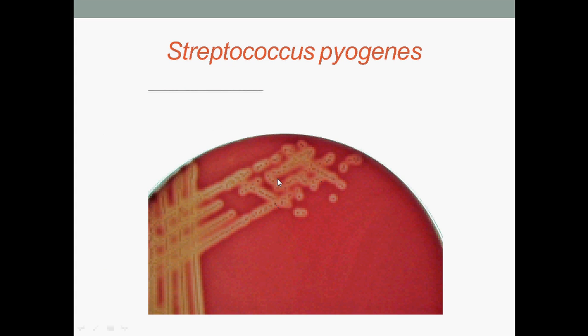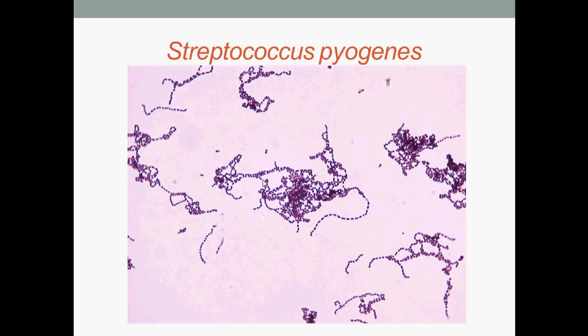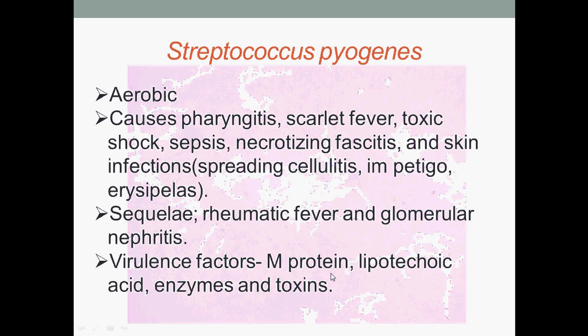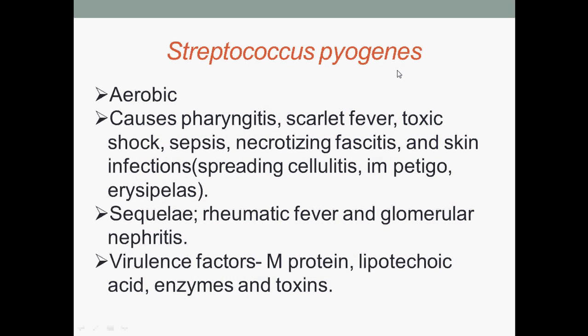Here we have Streptococcus pyogenes colonies on blood agar exhibiting beta-hemolysis, and Streptococcus pyogenes under microscopic view. Streptococcus pyogenes are aerobic and cause pharyngitis, scarlet fever, toxic shock, sepsis, necrotizing fasciitis, skin infections, spreading cellulitis, impetigo, and erysipelas. Sequelae include rheumatic fever and glomerulonephritis.